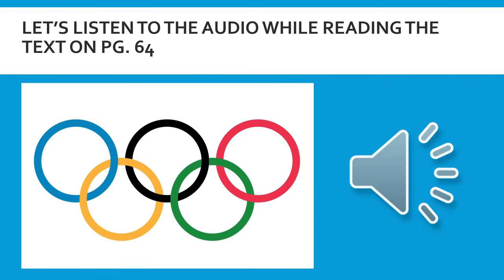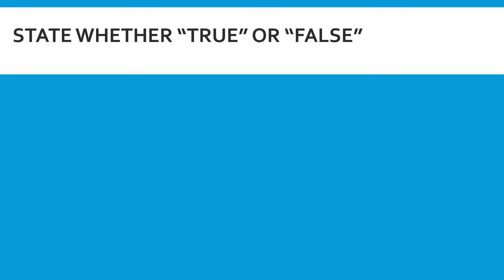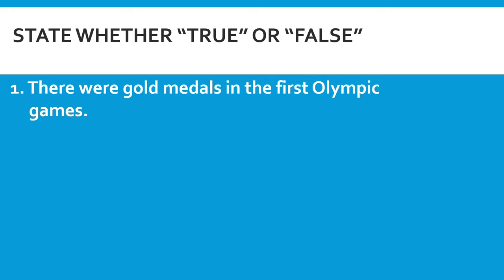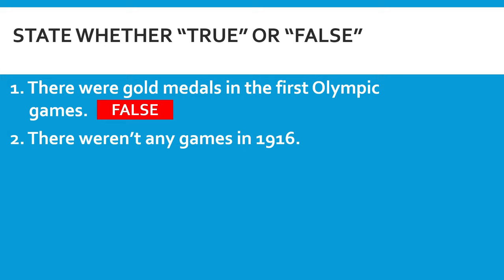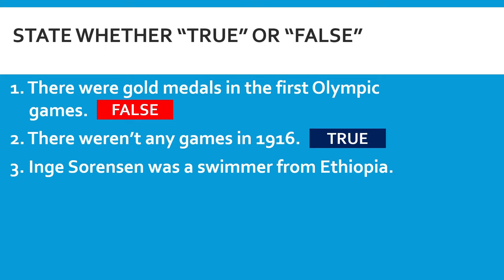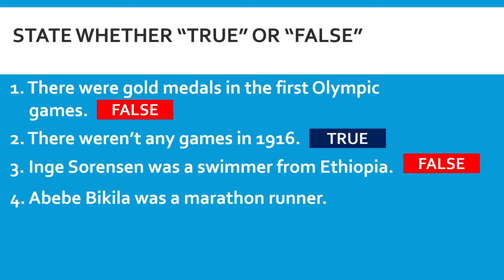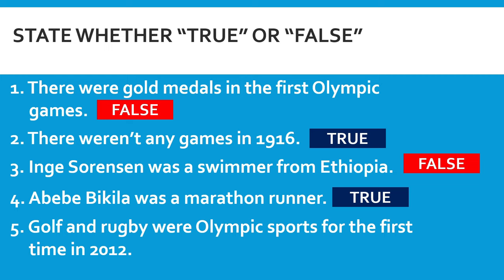So that's the end of the audio. Now let's state whether the statements are true or false. Statement one: there were gold medals in the first Olympic Games — false. There were no gold medals; there were only silver and bronze medals. Statement two: there weren't any games in 1916 — true, because there was a war. Statement three: Inger Sorensen was a swimmer from Ethiopia — false. Inger Sorensen was a swimmer from Denmark. Statement four: Abibi Bikila was a marathon runner — true. Statement five: golf and rugby were Olympic sports for the first time in 2012 — false. Golf and rugby were Olympic sports for the first time in 2016.